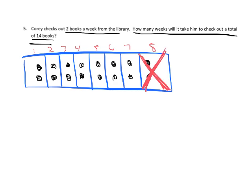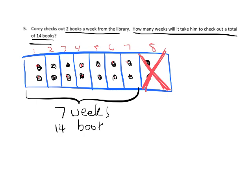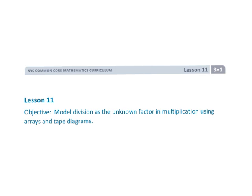So there it is. 7 weeks. 1, 2, 3, 4, 5, 6, 7, 8, 9, 10, 11, 12, 13, 14. Good. There we go. If I wanted to label it, I would say, that's 7 weeks, 14 books. And there we go. You'll notice the array and the tape diagram. In this case, since I kind of went horizontal, the array and the tape diagram look a lot the same. And that is lesson 11 for third grade module 1.